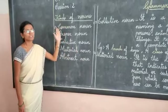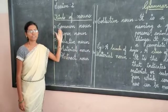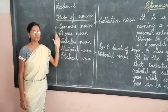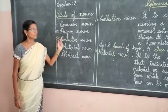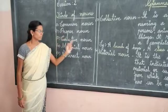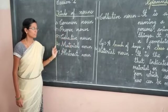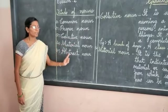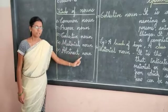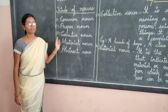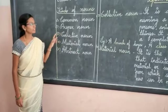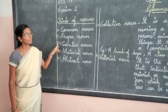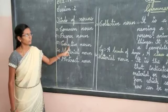See the kinds of noun. The very first one is common noun. Second one is proper noun. Third one is collective noun. Fourth one is material noun. Fifth one is abstract noun. So today we will go to see the third kind of noun — collective noun.